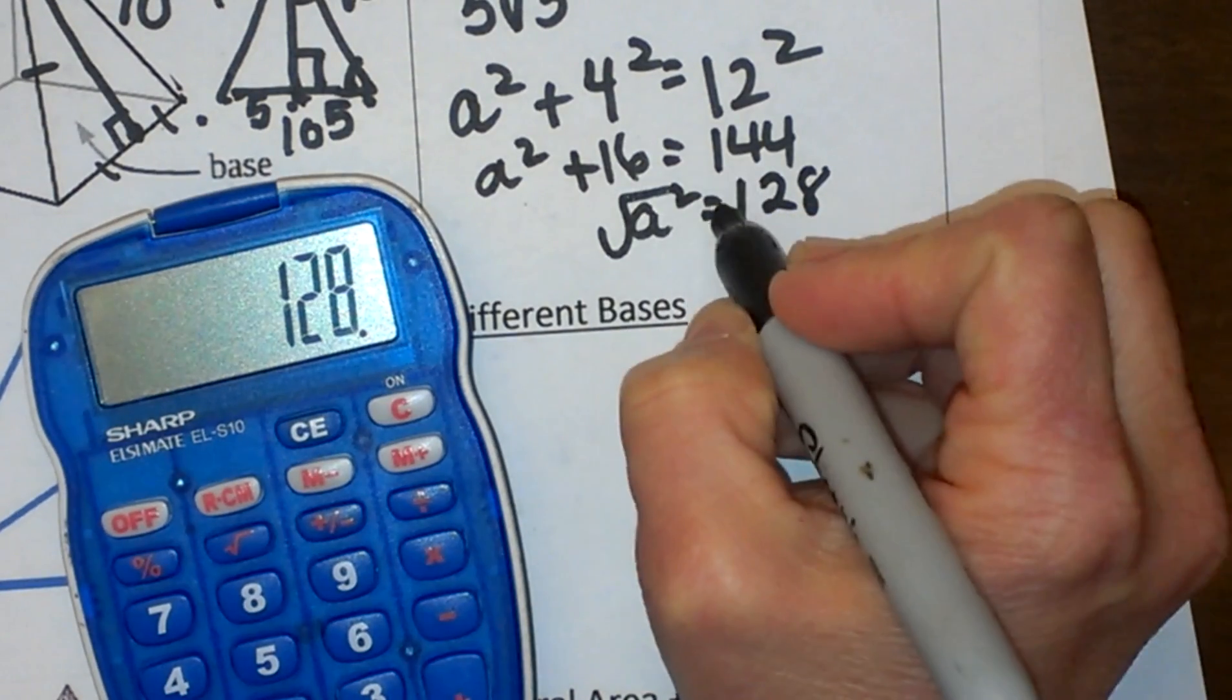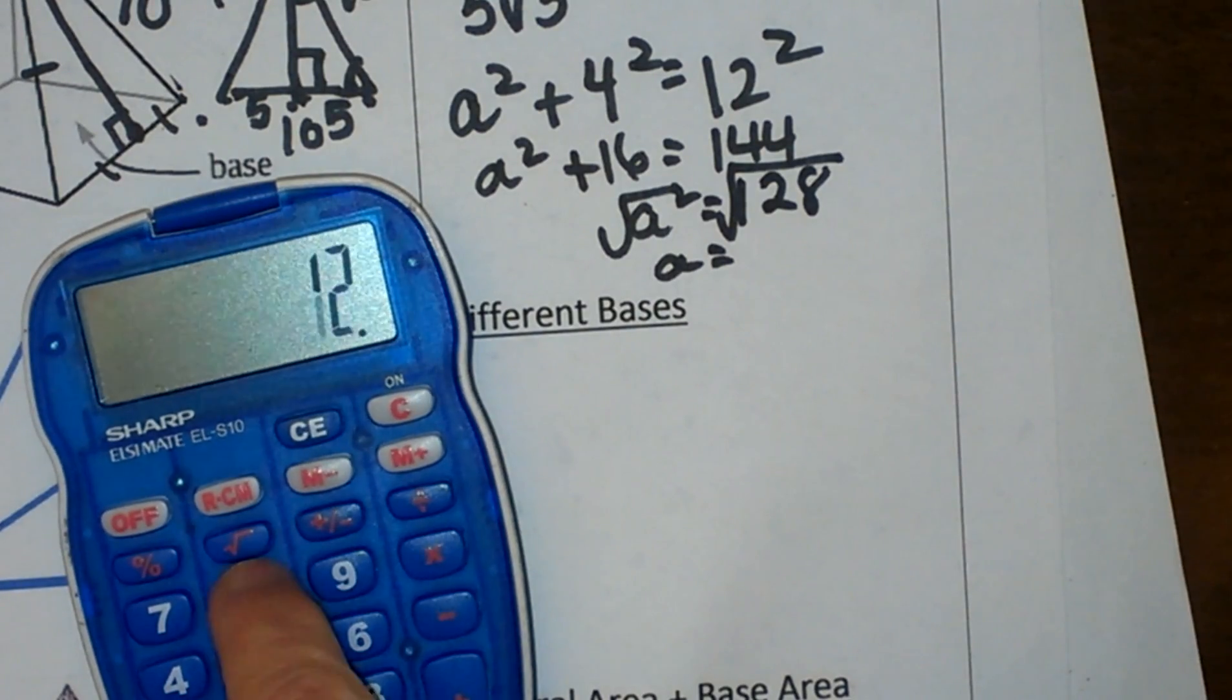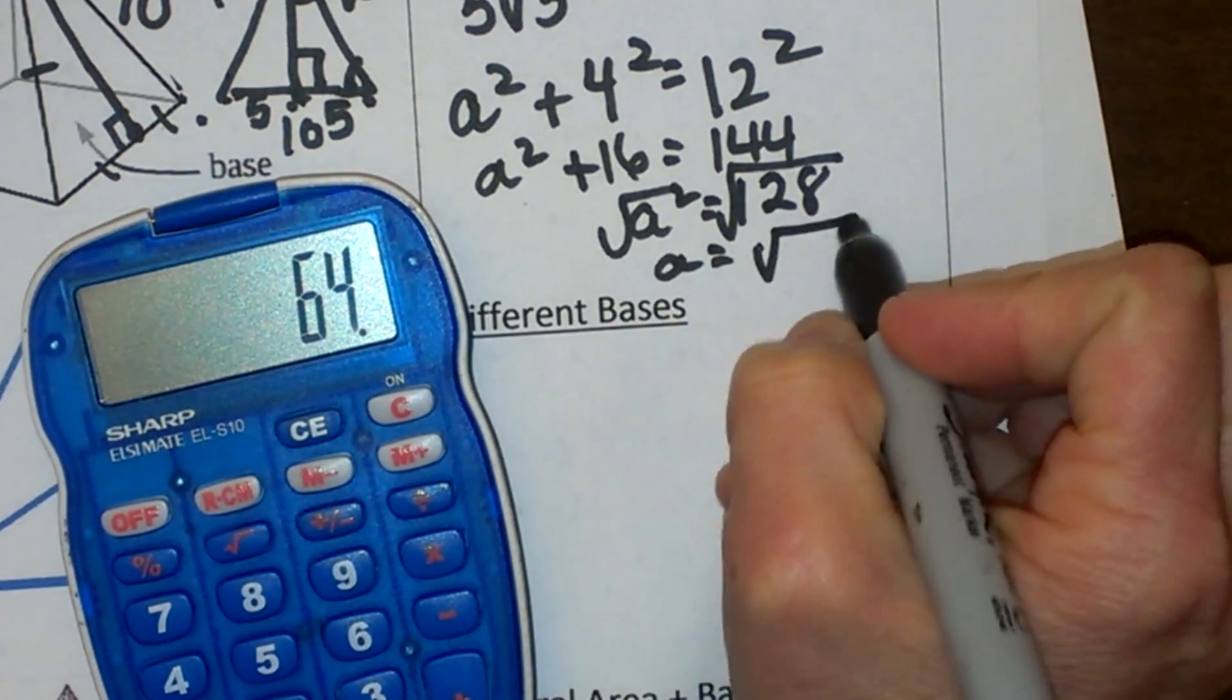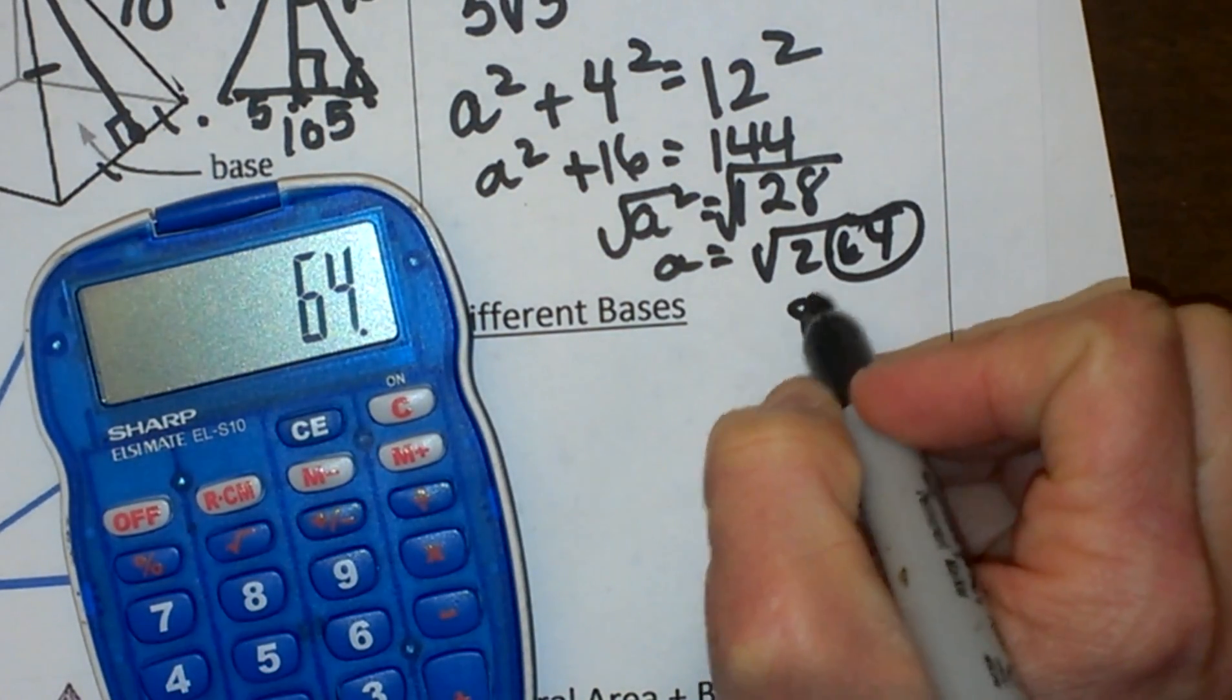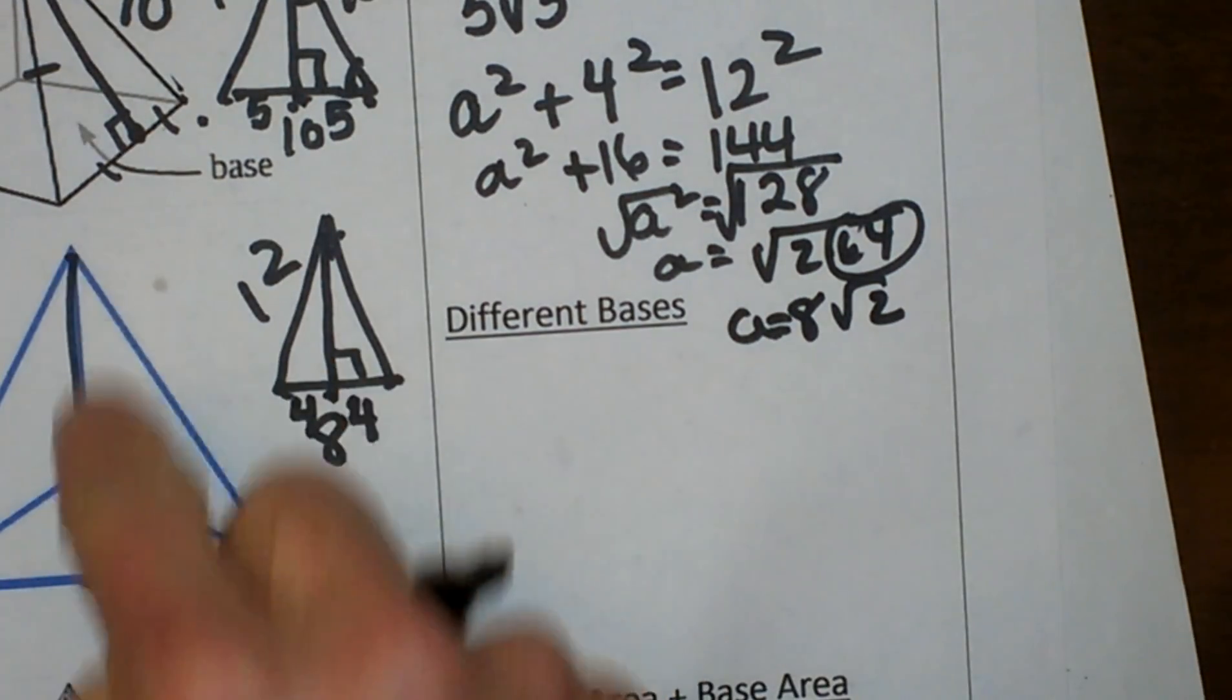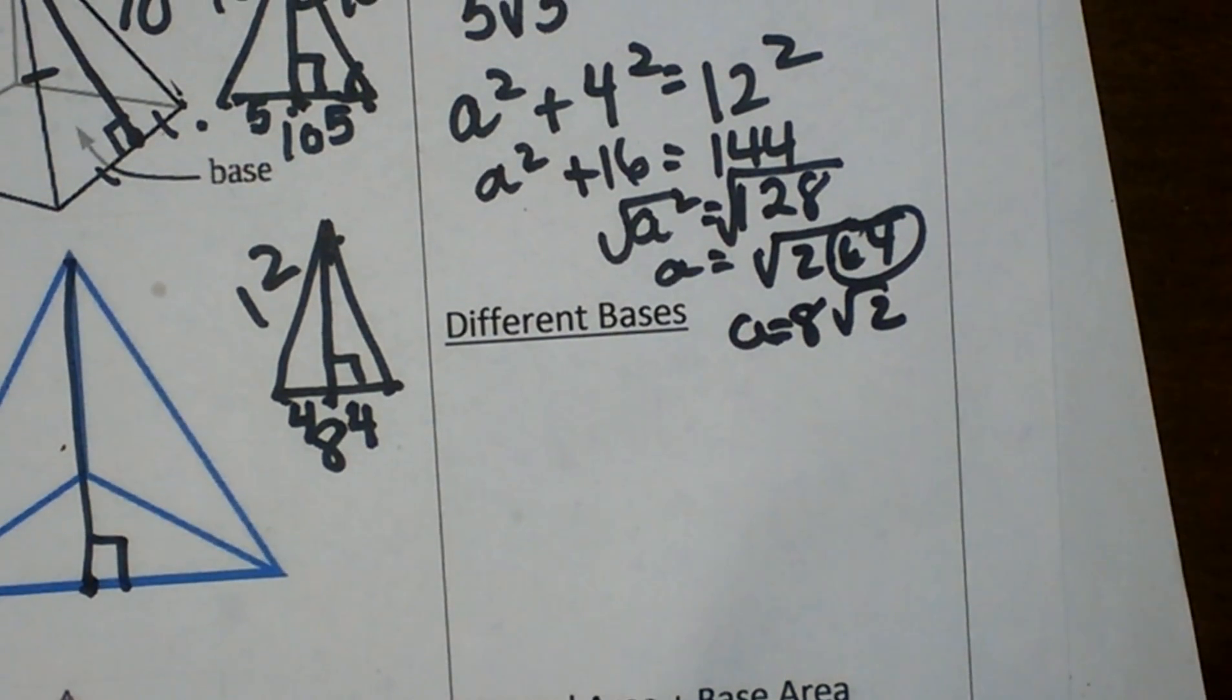So let's take the square root of both sides. The square root of a squared is a, and then I have to break down 128, so let's divide it by 2 and it is 64, so that is the square root of 2 times 64. Well 64 is a perfect square so I am going to take an 8 out, so it is 8 square root of 2, and that would be my slant height right here that I have now isolated, and that is how you find slant height in a pyramid.